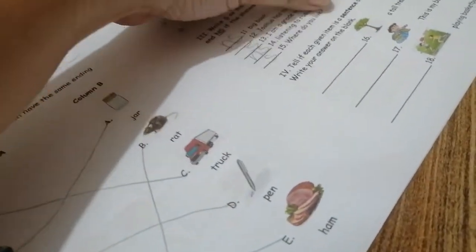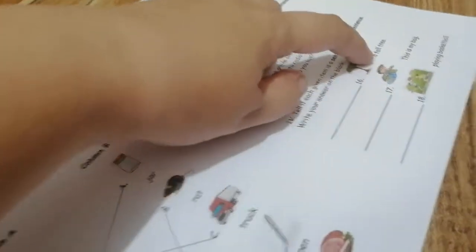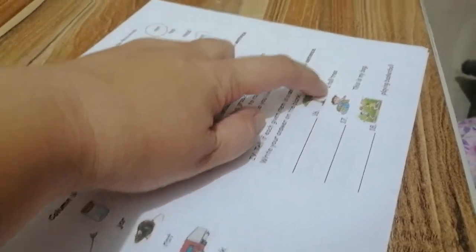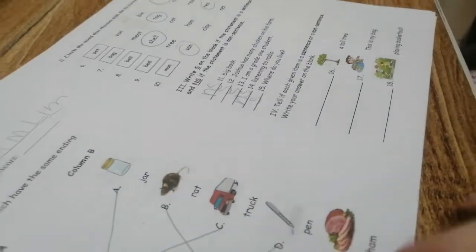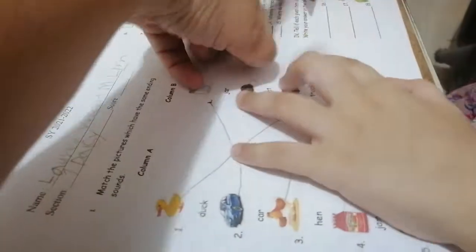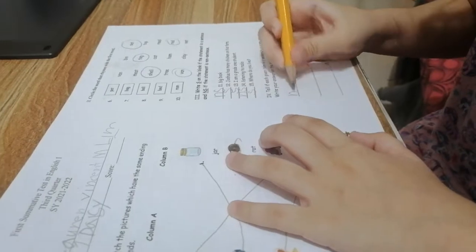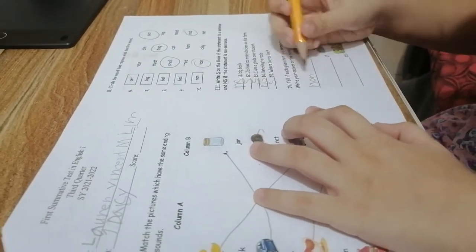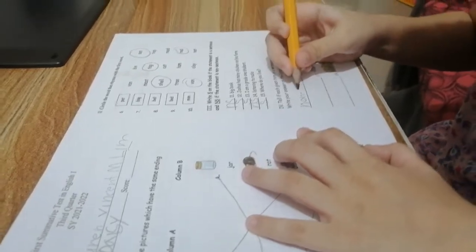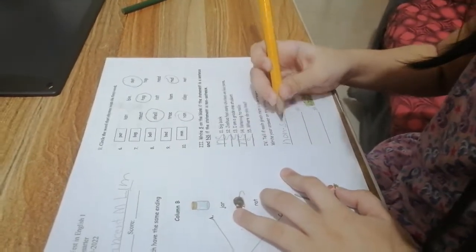Tell if each given item is a sentence or a non-sentence. So you're gonna write the word, ha? Yung word mismo. With a big letter? With a dot? Basahin. A tall tree. Is that sentence or non-sentence? Non-sentence. Oh, isusulat mo yung word, non-sentence. Maliliit lang letter para magkasya.